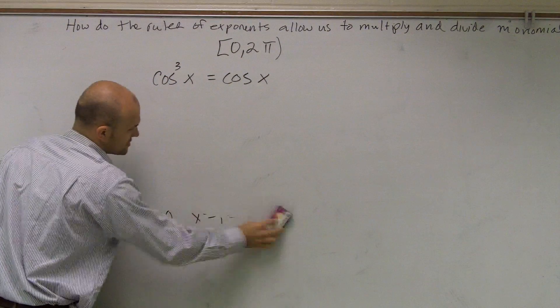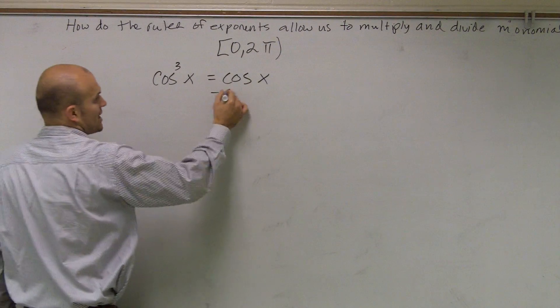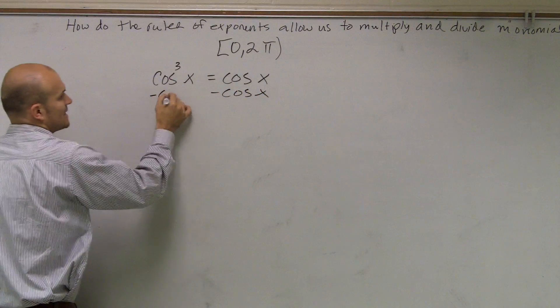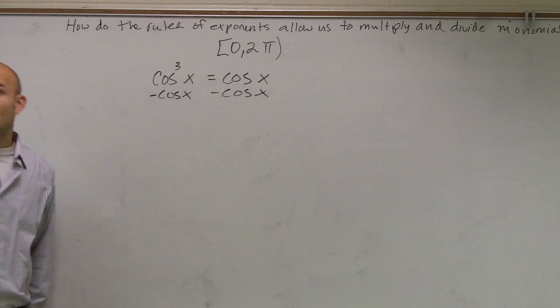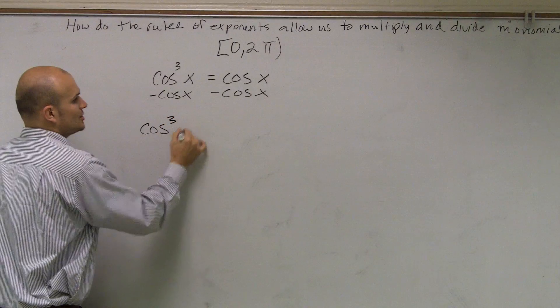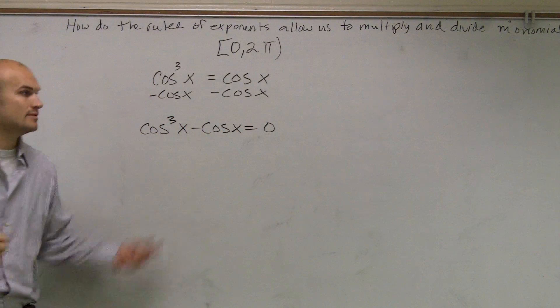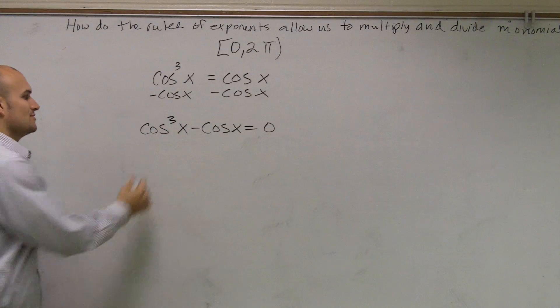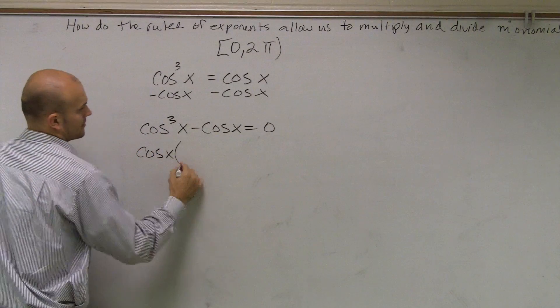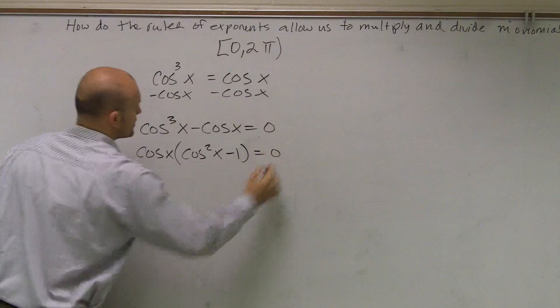So to do this problem, I'm going to do the exact same thing. I'm going to subtract a cosine of x on both sides. So now it makes sense why I do that, rather than just me saying oh, just put the cosine on the other side. So you have cos³x minus cosx equals 0. Now, I can factor out a cosine of x, and I get cos²x minus 1 equals 0.